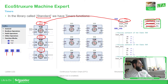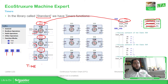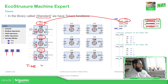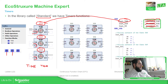Once you add it in the local or global variable list, you can use the instance name you defined in the question marks and then use the function block. Something important is this input — the PT. This PT input is defined as a time variable. The time variable has a different structure. In order to define a fixed time, you just need to use T# and then the unit of time. For example, if it is 10 seconds: T#10s.